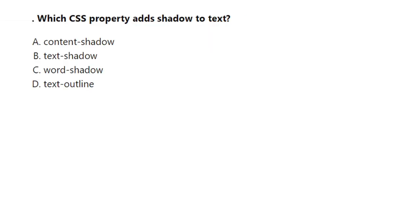Let's move to question number one of this lecture: which CSS property adds shadow to text? In cascading style sheets, whenever you write any text — in a heading section, paragraph section, or any other tag — if you want to add shadow to that particular text, what property should you use?